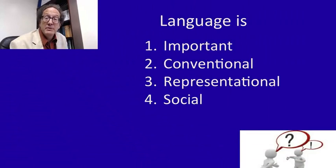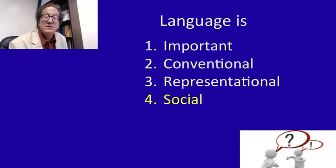We can understand humans and arguments better if we understand language better. Now I can't tell you everything that needs to be said about language — you'd need to take a linguistics course for that, and I recommend you try one because it's very interesting. But here I'm only going to be able to make four basic points about language. First, language is important. Second, it's conventional. Third, it's representational. And fourth, it's social. That should at least get us going in understanding what arguments are made of.